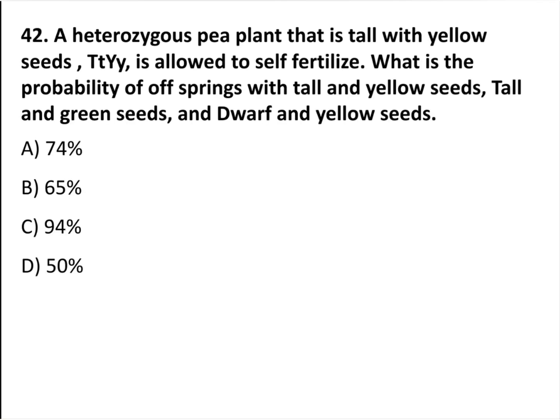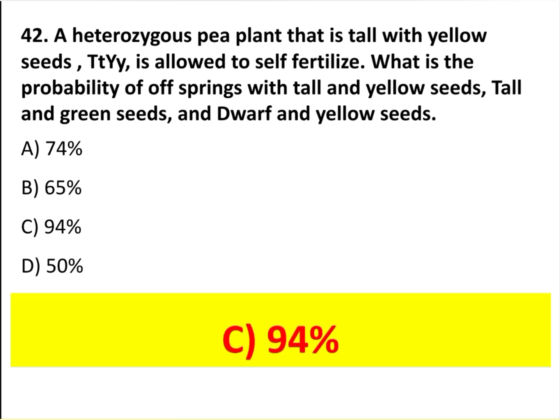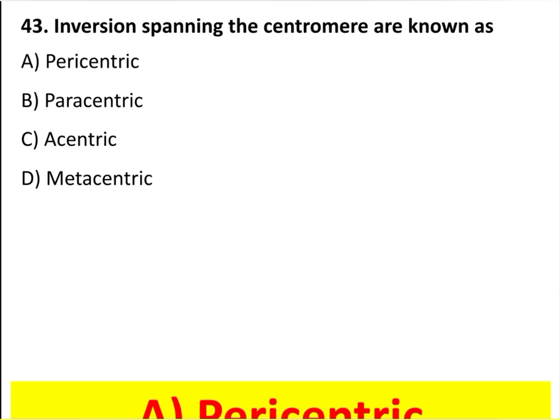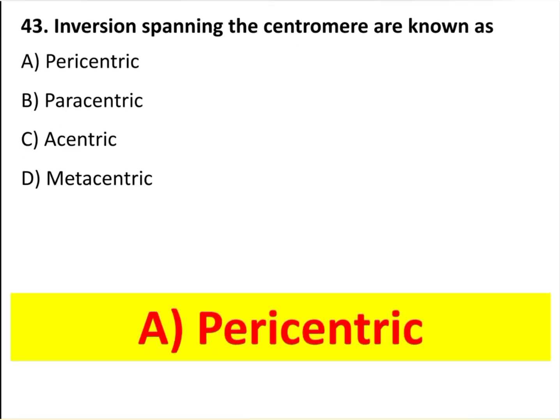A heterozygous pea plant that is tall with yellow seeds is allowed to self-fertilize. The probability of offspring with tall and yellow seeds, tall and green seeds, and dwarf and yellow seeds is 9:4. Inversions spanning the centromere are known as pericentric inversions.